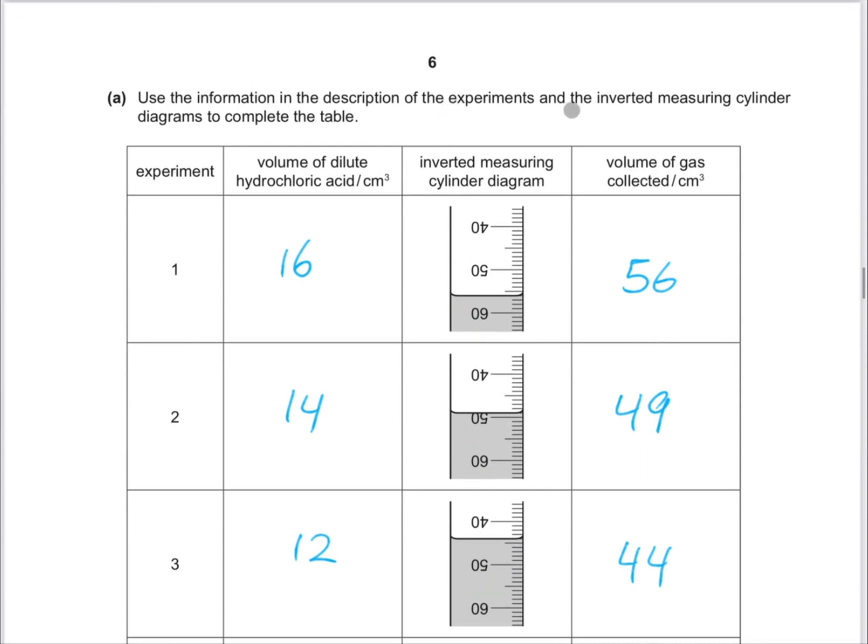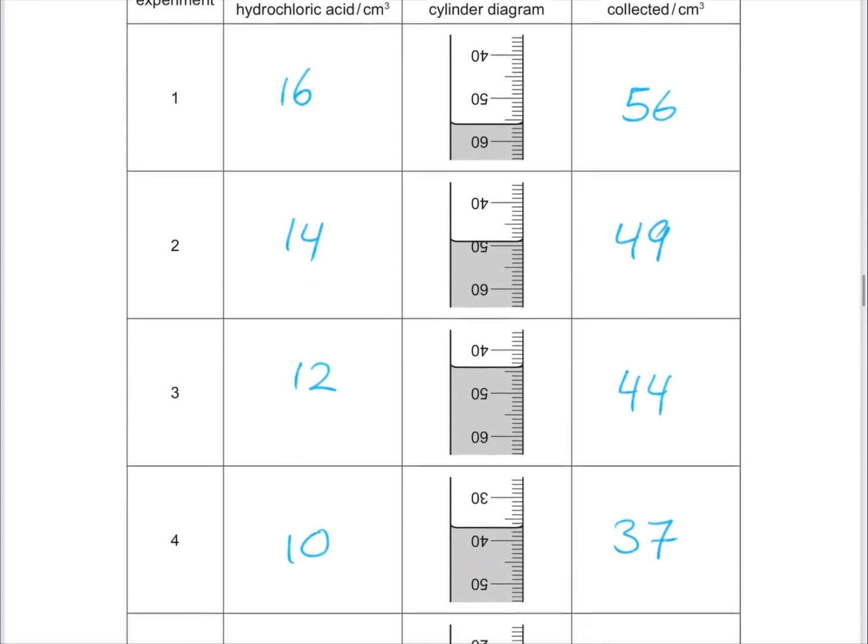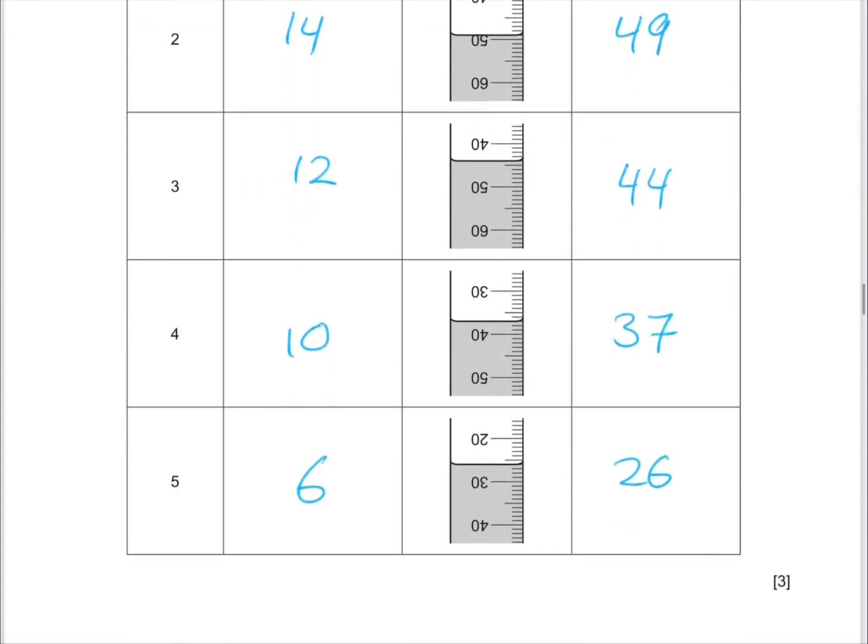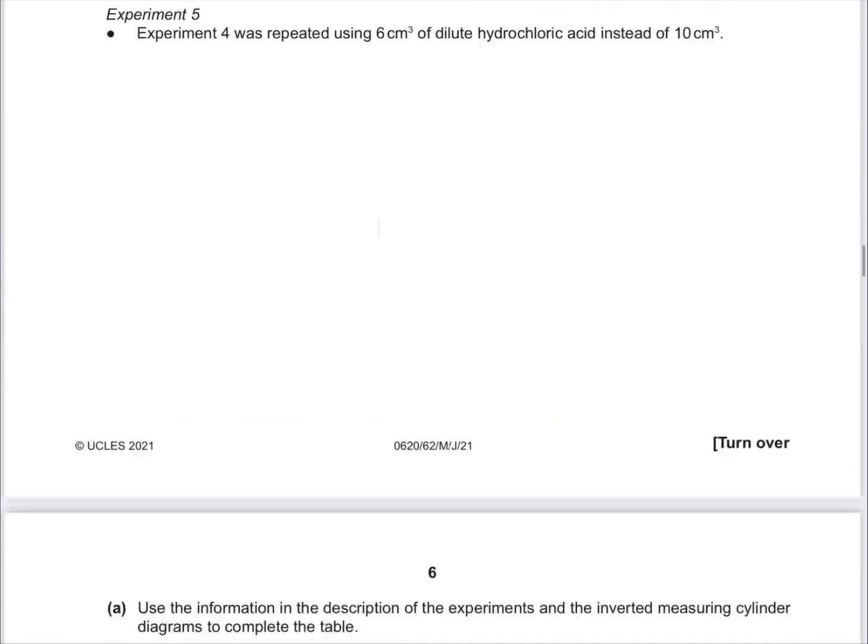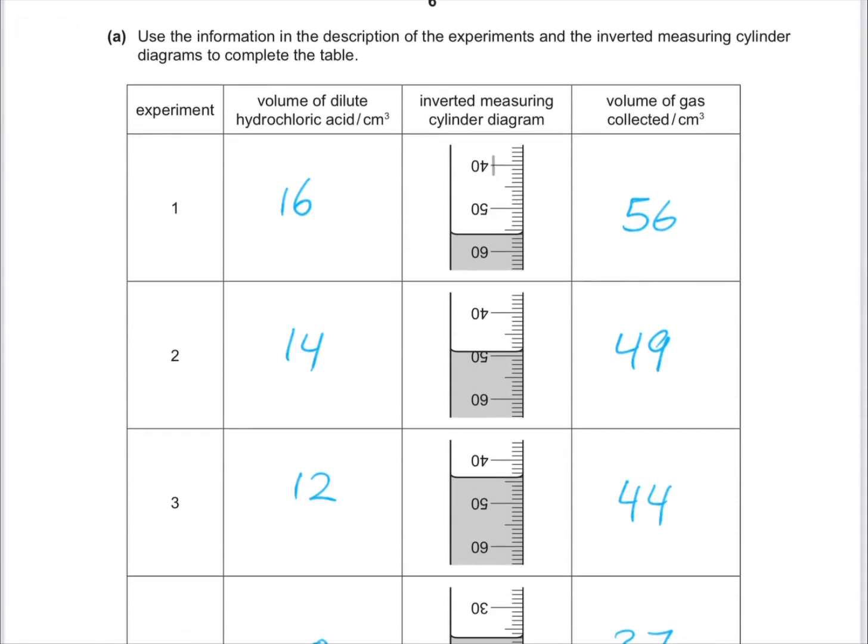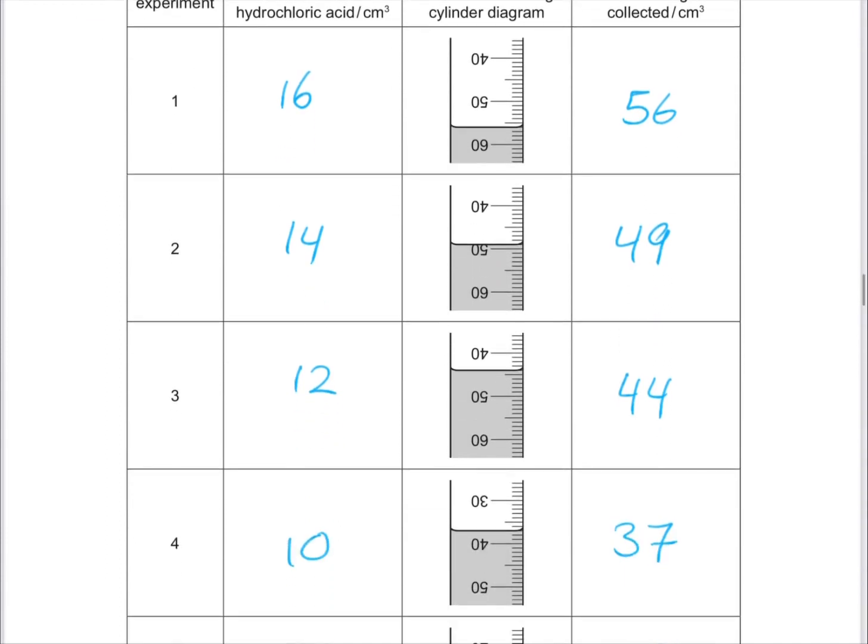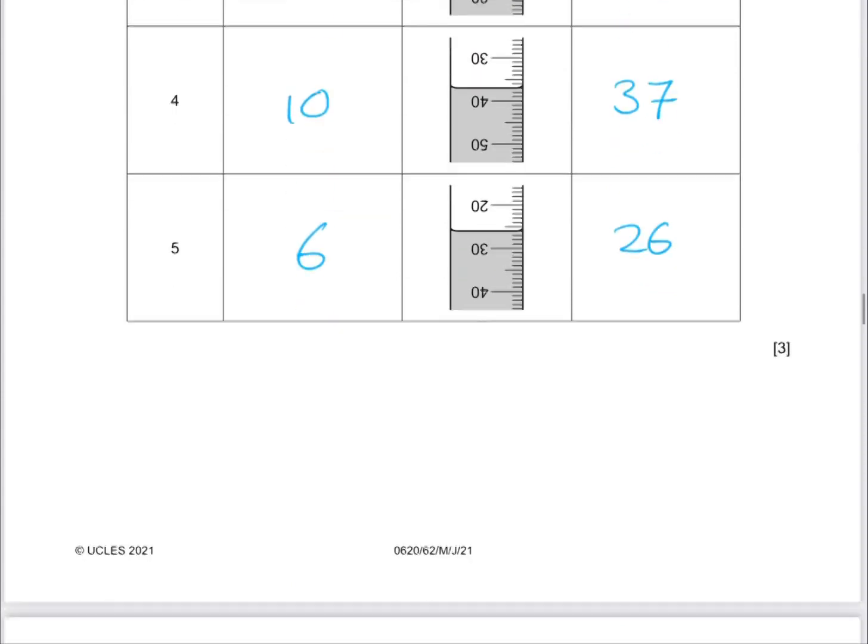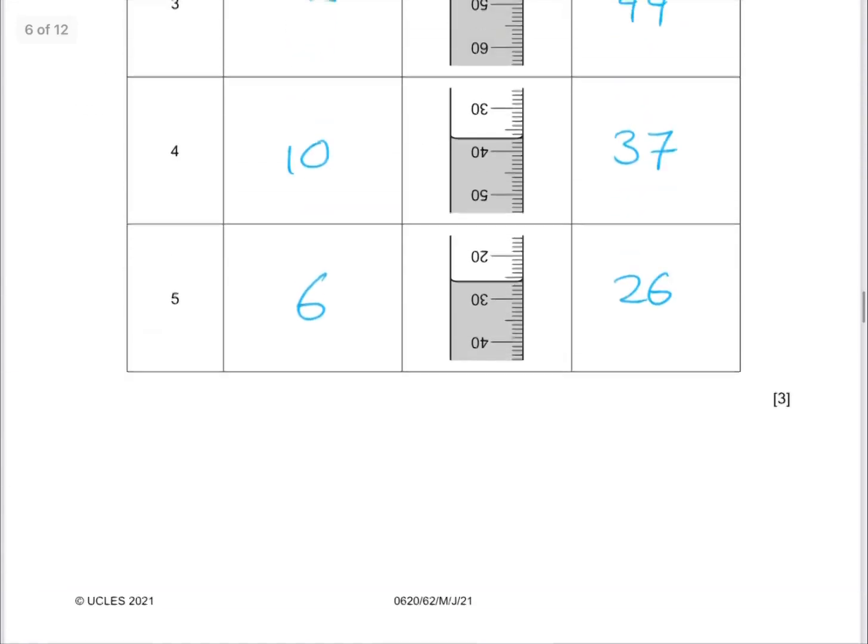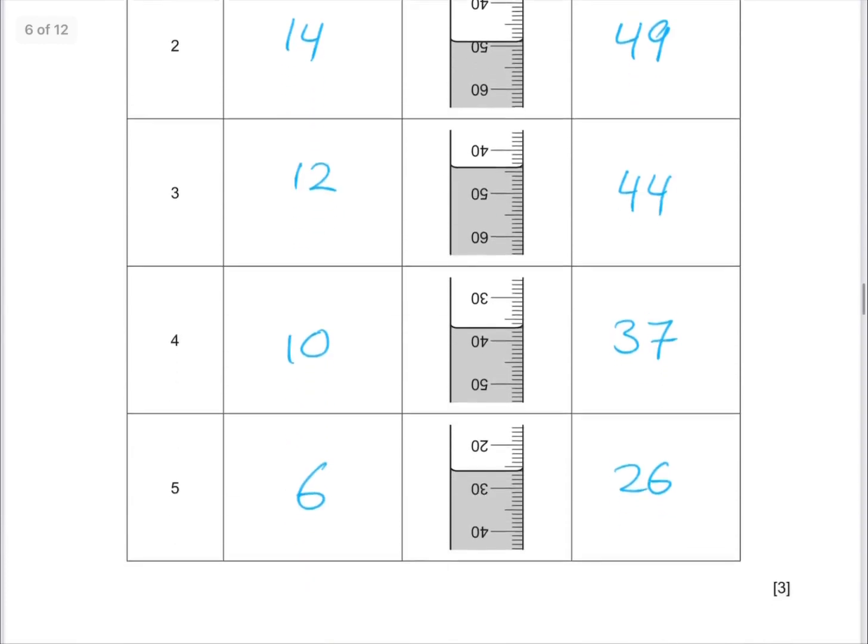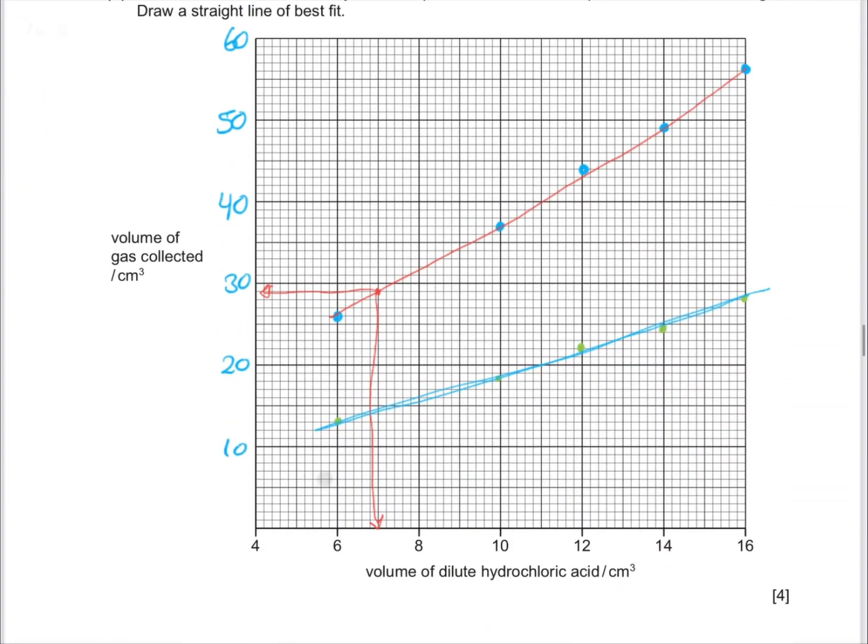Let's use the information in the description of the experiment and the inverted measuring cylinder diagram to complete the table. The volumes of dilute hydrochloric acid were 16, 14, 12, then 10, and then 6. The volume of gas collected was 56, then 49, then 44, then 37, then 26.